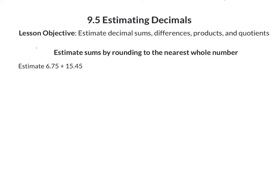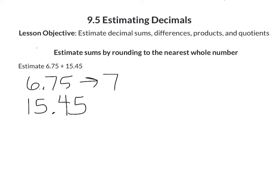The problem will tell you which place to round to. We're going to start by estimating sums by rounding to the nearest whole number. For our first example, we're estimating 6 and 75 hundredths plus 15 and 45 hundredths. 6 and 75 hundredths is between 6 and 7, but closer to 7, so it rounds to 7. 15 and 45 hundredths is between 15 and 16, and because it's less than 15 and a half, we round down to 15. Adding 7 and 15, we get an estimated sum of 22.